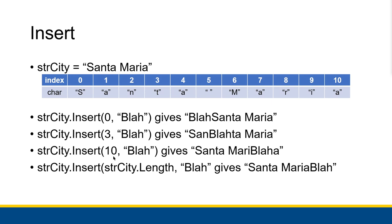If we start it at index 10, which is the last valid index for Santa Maria, it actually muscles this A out of the way. So the A then comes after blah. We have Santa Mari, blah, A. If we want to actually put blah at the very end, we want to concatenate it to the end, what we can actually do is put in 11, or the length of our string city right here. And that actually sticks blah at the end.